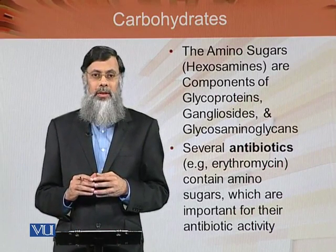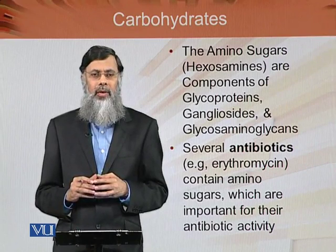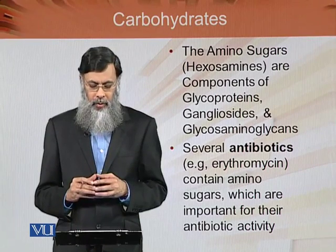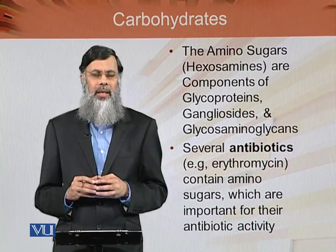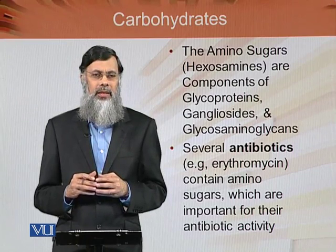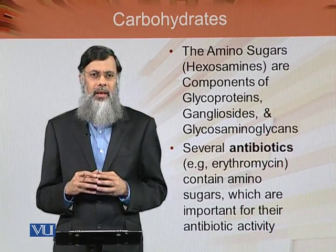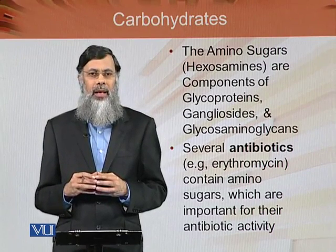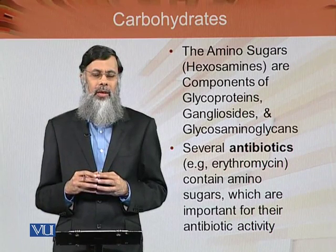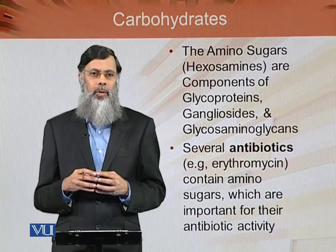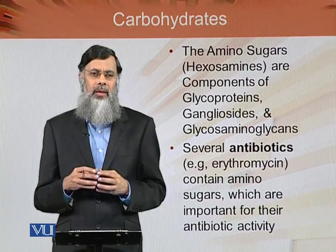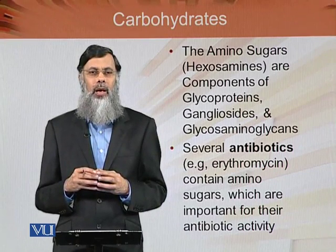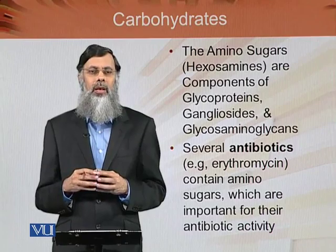The amino sugars, or hexosamines, are components of glycoproteins, gangliosides, and glycosaminoglycans, also known as GAGs. We will discuss gangliosides, glycoproteins, and GAGs in the next few modules. Several antibiotics like erythromycin, which is used for killing bacteria in human and animal bodies, contain amino sugars required for the activity of that particular antibiotic.